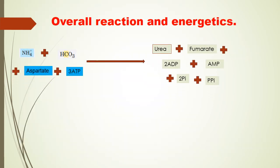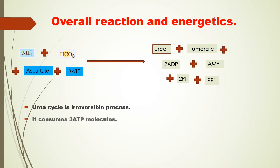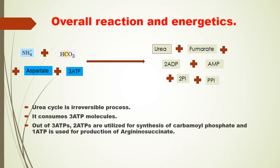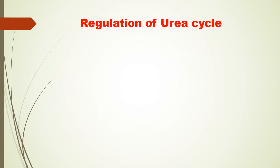The urea cycle is an irreversible process. It consumes three molecules of ATP in total: two ATPs are used for synthesis of carbamoyl phosphate and one ATP is used for production of argininosuccinate.